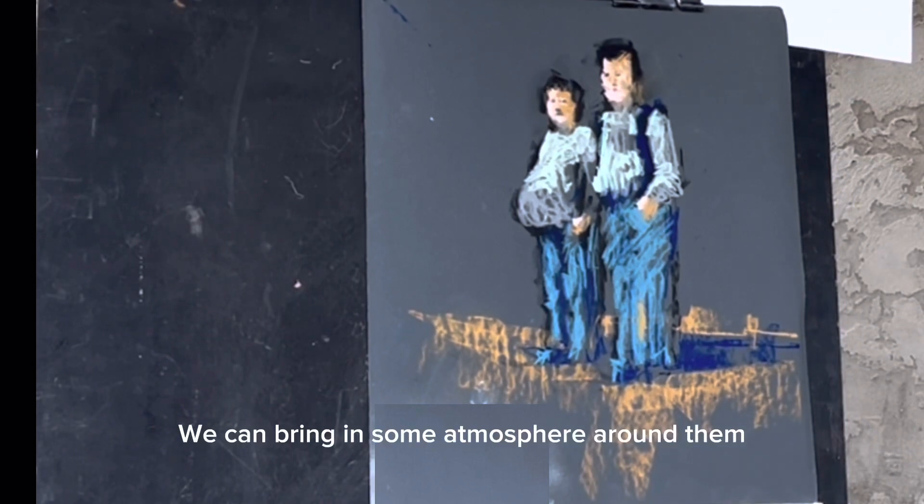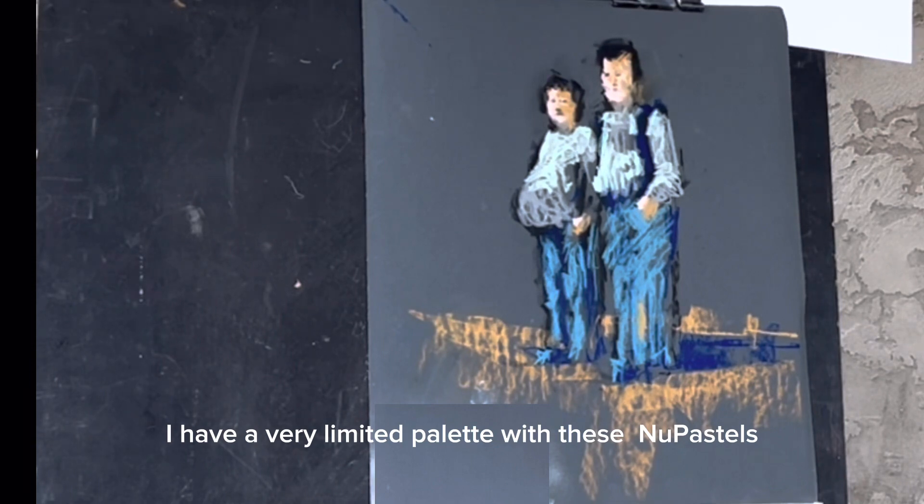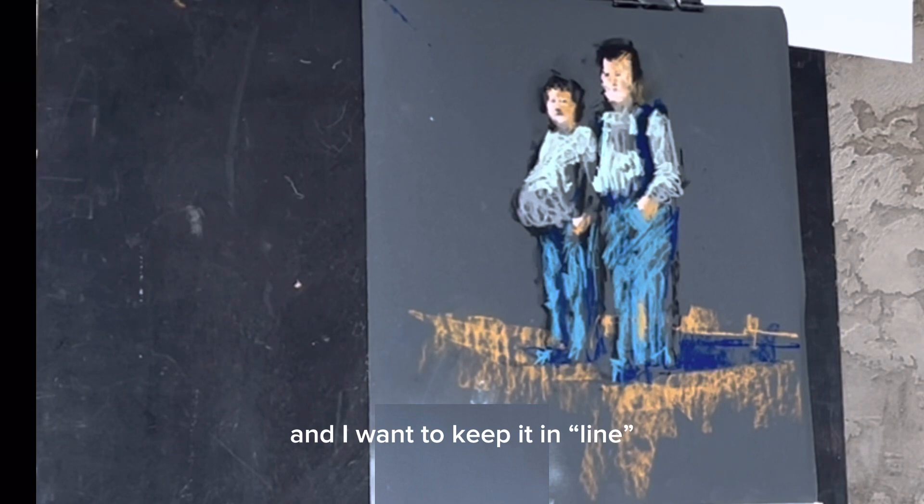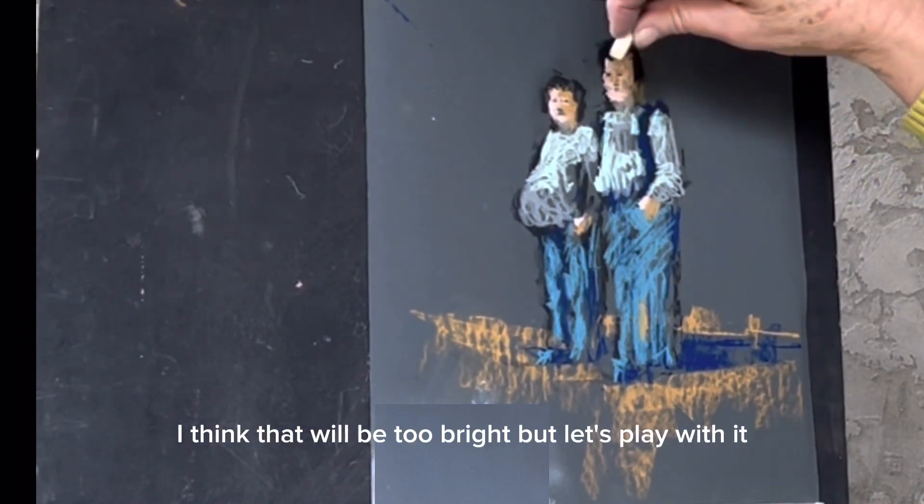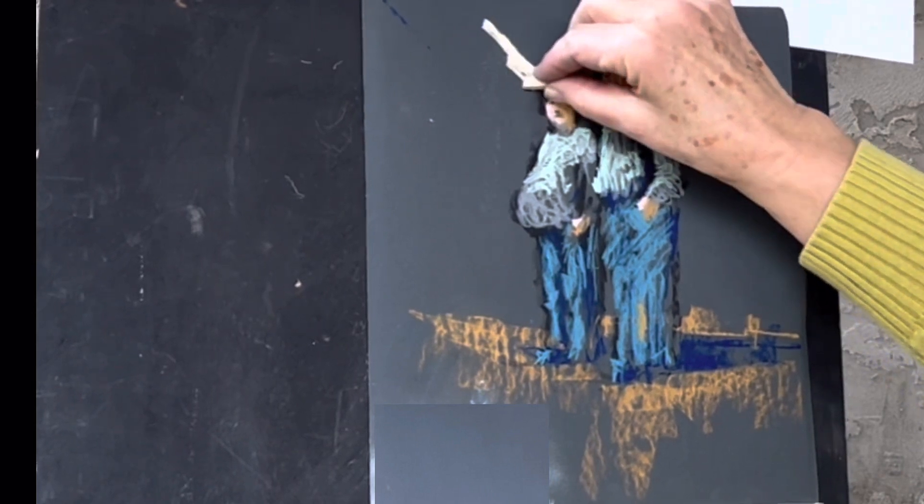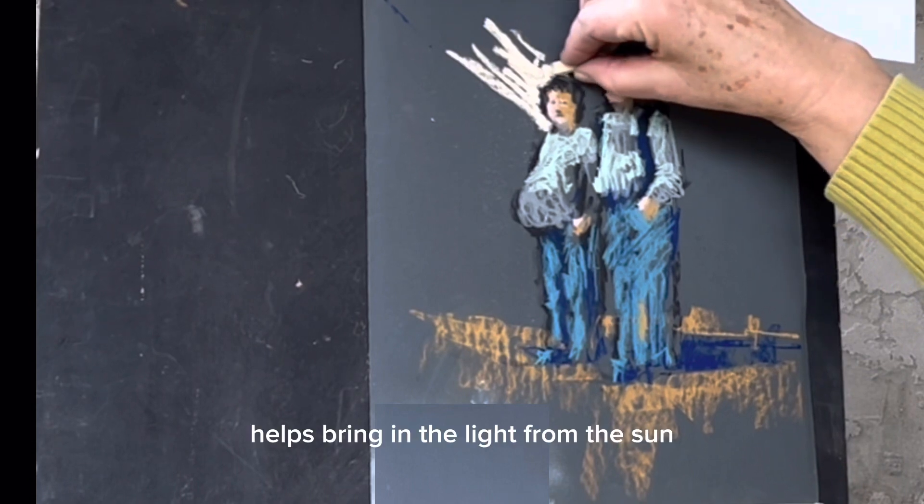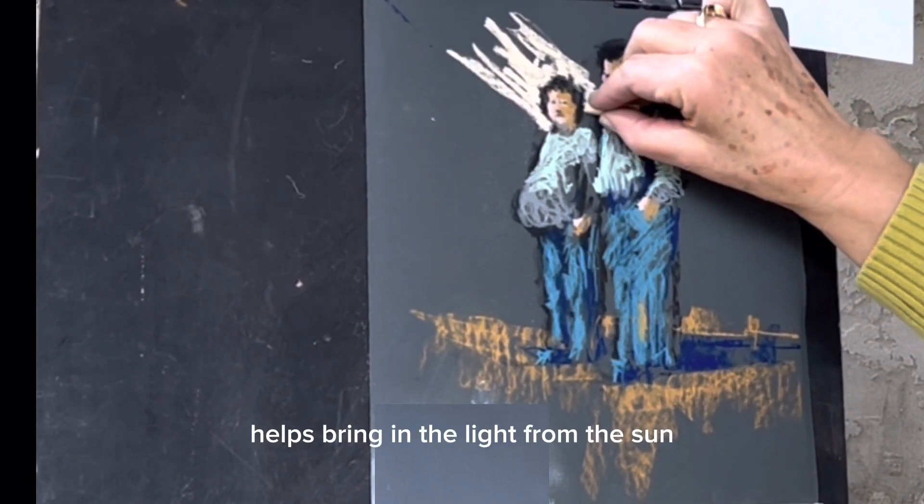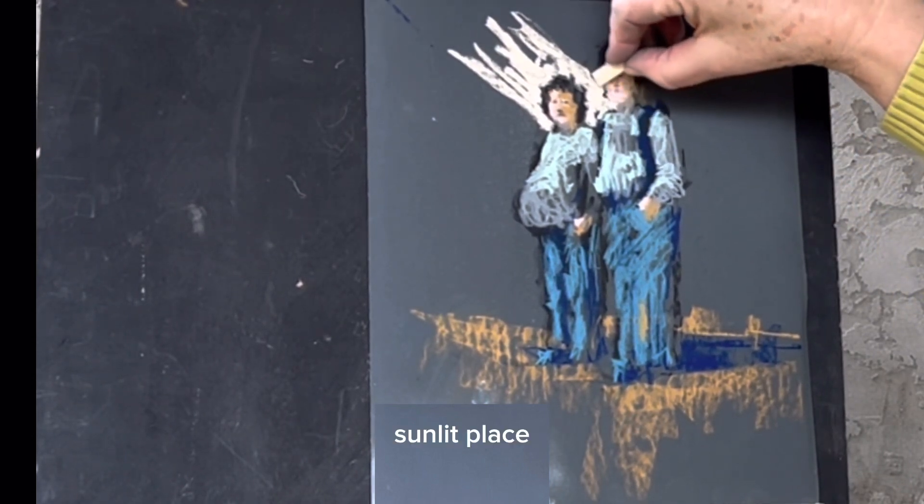We can bring in some atmosphere around them. Let's pretend that the sun is out. I don't want it too bright. I have a very limited palette with these new pastels. And I want to keep it in line. I think that will be too bright, but let's play with it. Nice diagonal. Helps bring in the light from the sun. Makes it feel like they are in a very sunlit place.